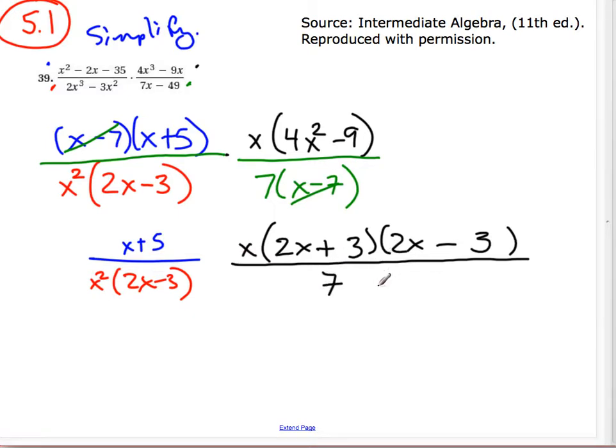So now I take a look again to see if there's anything that is a factor of 1 that I can get rid of. 2x minus 3, 2x minus 3. That's a factor of 1. Take both those out. So on the top, I'm left with an x plus 5. And an x. I'll put that out front. And a 2x plus 3. And on the bottom, I'm left with an x squared and times 7. And we put the 7 out front.